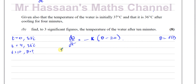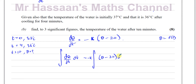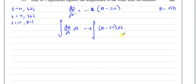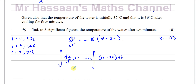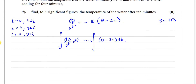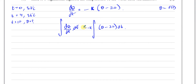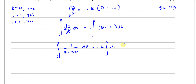What we can do is integrate both sides with respect to T. There's a constant minus K outside, and we have θ minus 20. When we do this, the dT cancels, leaving dθ on one side. We need to separate the variables so that all θ terms are on one side and all T terms on the other. Dividing both sides by (θ minus 20) gives us the integral of 1 over (θ minus 20) dθ on one side, and minus K times the integral of dT on the other.